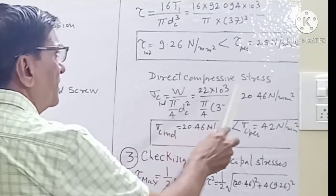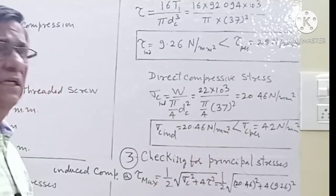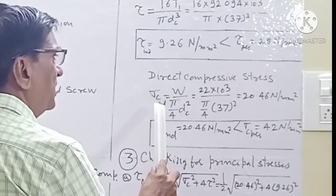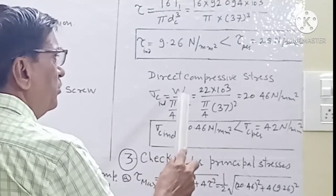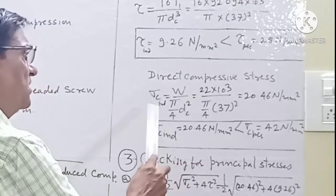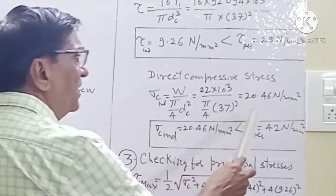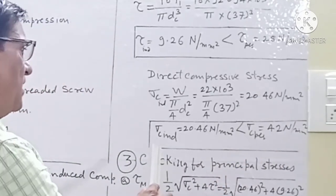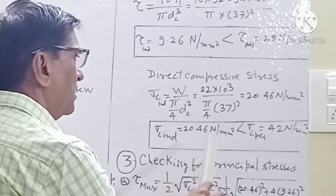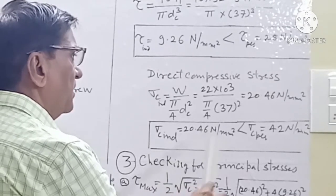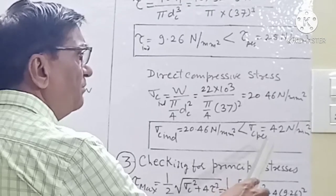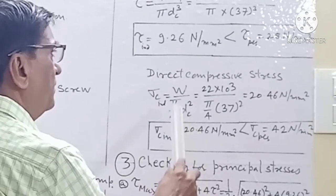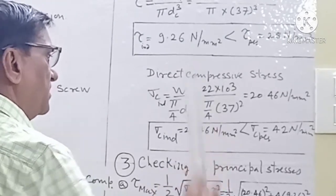Now we find the direct compressive stresses. Using the formula σC_induced equal to W upon (π/4)·DC², the induced compressive stress comes out to be 20.46 N/mm². As σC_induced is less than σC_permissible, which is 42 N/mm², hence the screw is safe in compressive stresses.